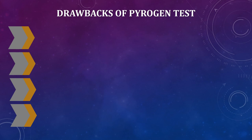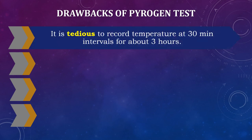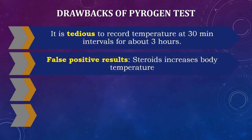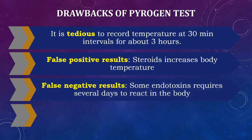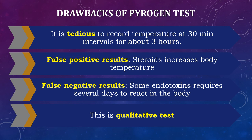The pyrogen testing in rabbits has some drawbacks. It is tedious because the temperature of the rabbits is taken at 30-minute intervals for about 3 hours, so it is a longer duration. Some substances like steroids have the ability to increase body temperature when injected, which could lead to a false positive result. It takes some endotoxins several days to react in the body and not just hours, which can lead to false negative results. The rabbit test only detects the presence of pyrogens; it cannot be used to determine the quantity. Hence, we have to shift toward the bacterial endotoxin test.